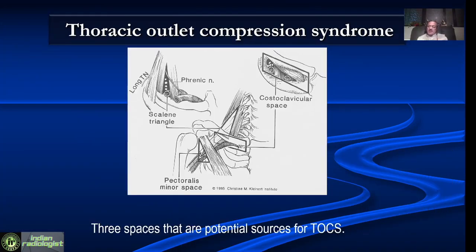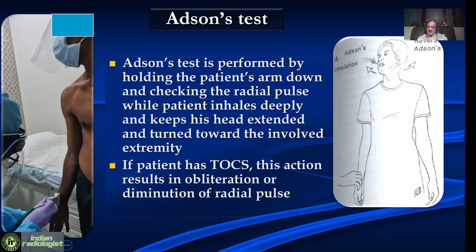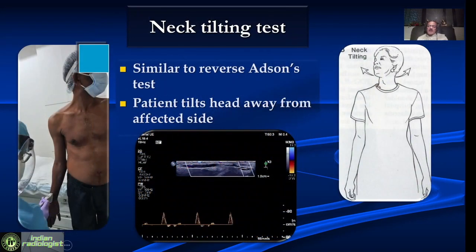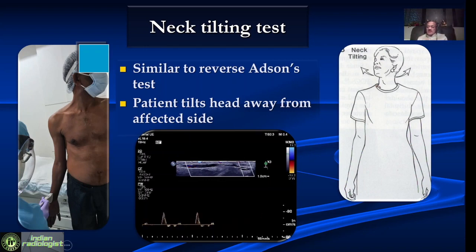There are some other tests for thoracic outlet compression. One is the Adson's test — the patient stands, drops the ipsilateral hand, tilts to the same side, and takes a deep breath in. If the patient has a thoracic outlet problem, the radial pulse becomes weak clinically, and we can also keep the ultrasound probe and look for alteration in the waveform. There is also the neck tilting test or reverse Adson's, where the patient looks to the opposite side — if no thoracic outlet issue, there is no significant alteration in the waveform.